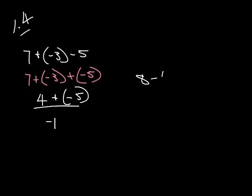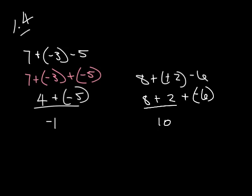When I have 8 minus negative 2 minus 6, when you have two negatives side by side like this, we change them both to positives and continue on. So we're going to leave that as 8 plus 2, and we're going to change that to plus negative 6. 8 plus 2 is 10, plus negative 6. Signs are different, so we take the difference and put the sign of the largest one on there, which would be positive 4.